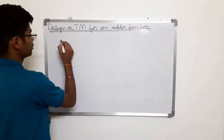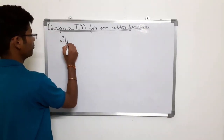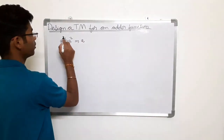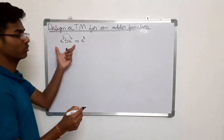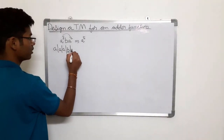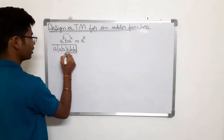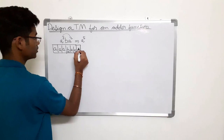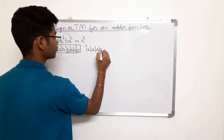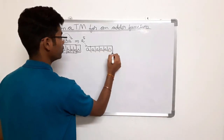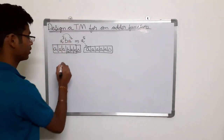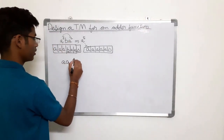Let's consider a string a^3 b a^2. If the input is this, then the output should be a^(m+n), which is 3+2=5. So the output should be 5 a's. If this is our tape — a a a b a a delta — then the output should be 5 a's.